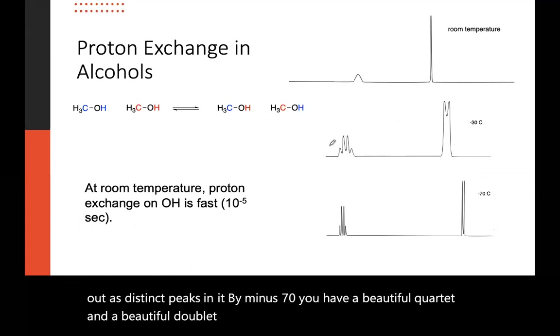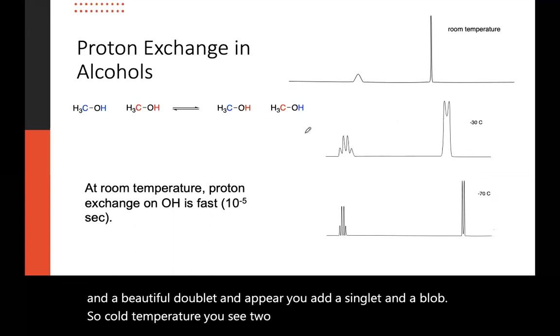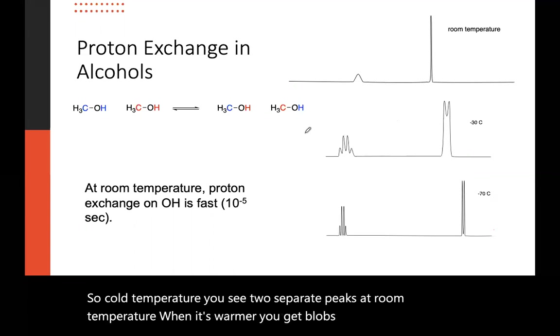And up here, you have a singlet and a blob. So cold temperature, you see two separate peaks. At room temperature, when it's warmer, you get blobs and you don't see the coupling as well.